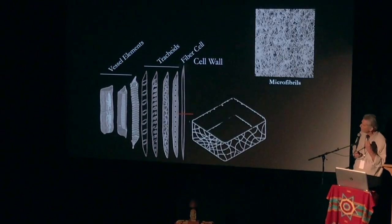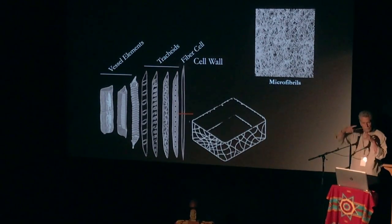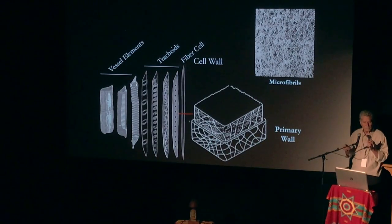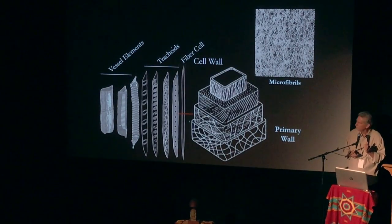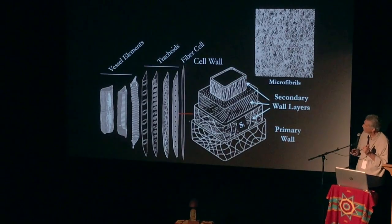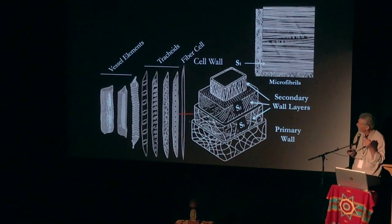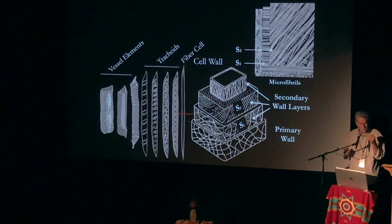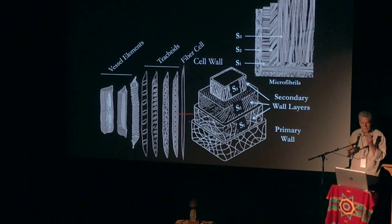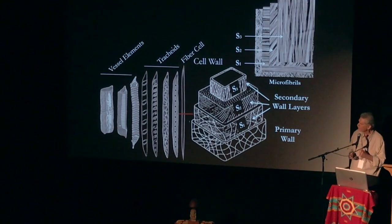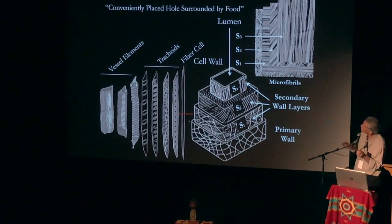Let's take a look at the cell wall. We cut that cell wall in half, and we can see that the primary cell wall has microfibrils or cellulose that are glued together with hemicellulose and strengthened with lignin — that's the primary wall. As the cell matures, it lays down a secondary wall on the inside in three different layers: S1, S2, and S3, each with microfibrils running a different direction. It's like making plywood with different biases of the wood grain — it really makes it strong. And there's the lumen, the inside of the cell, which is a conveniently placed hole surrounded by food if you're a fungus.